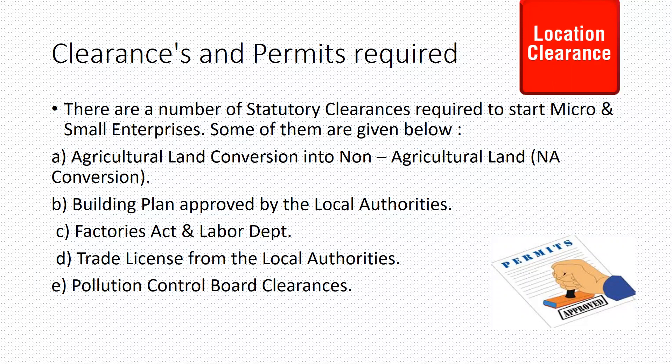Power feasibility must be obtained from the State Electricity Board. It is necessary to obtain water supply services from local bodies. Sales tax registration must be done with the Commercial Tax Department. Registration and license according to the Factories Act, Provident Fund, and ESI registration should also be obtained. There are a number of statutory clearances required for starting micro and small enterprises.